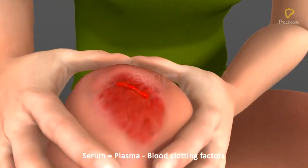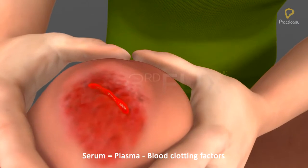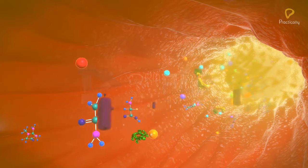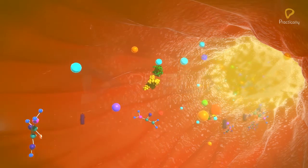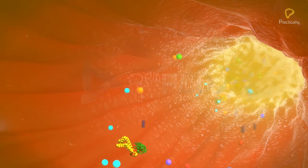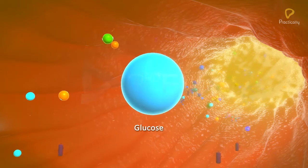Plasma without the blood clotting factors is called serum. The anticoagulant heparin is also present in the plasma. Plasma also contains organic substances like glucose.